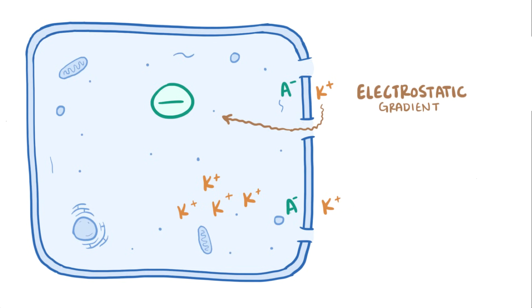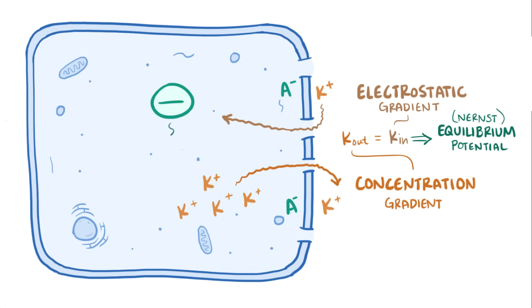This electrostatic gradient is established with the movement of relatively few ions, so it doesn't upset the overall concentration gradient that was already established. For potassium, the exact point when the potassium moving out of the cell due to the concentration gradient equals the potassium moving back into the cell due to the electrostatic gradient is called the equilibrium potential or Nernst potential for potassium, and it's about negative 92 millivolts. In other words, negative 92 millivolts is the electric potential for attracting potassium into the cell that's needed to balance the concentration gradient that's pushing potassium out of the cell.